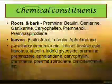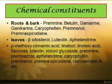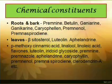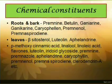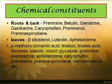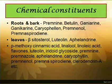Coming to the chemical constituents of Agnimant, the alkaloids Premninine, Betulin, Ganyarine, Ganycarine and Premniol are the pharmacologically active constituents found in the roots and bark. The leaves are reported to have beta-Sitosterol, Luteolin, Clarodendrin A and Iridoid alkaloids as active constituents.